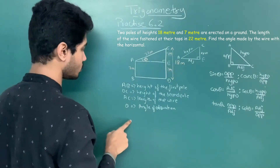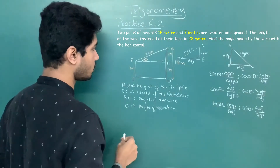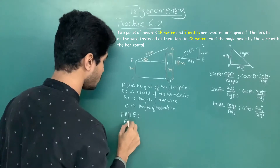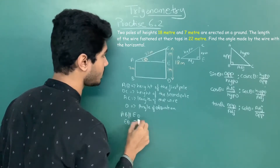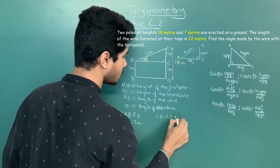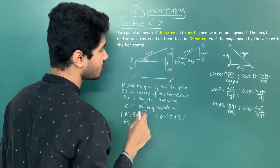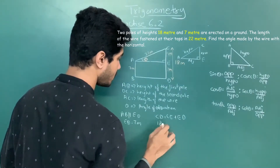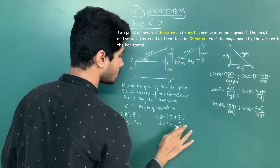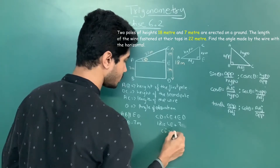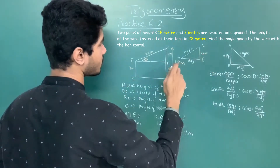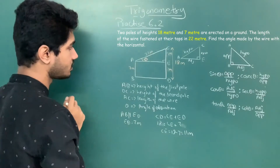We write it in sentence form: since AB is parallel to ED, the length of AD equals 7 meters. Now CD equals CE plus ED. CD is given as 18m, and ED is 7m, so CE equals 18 minus 7, which equals 11 meters. Now we know CE and AC, so we can find the angle of elevation theta.